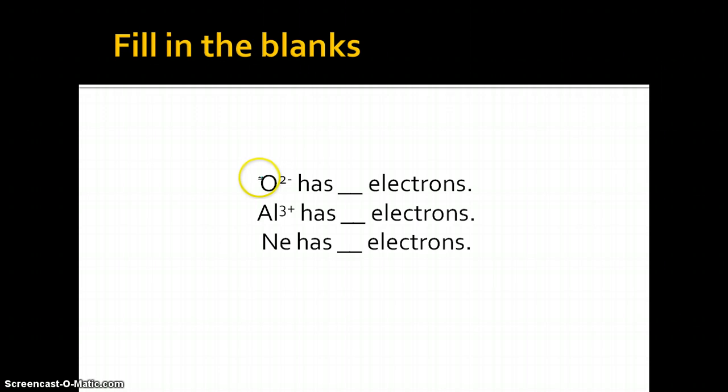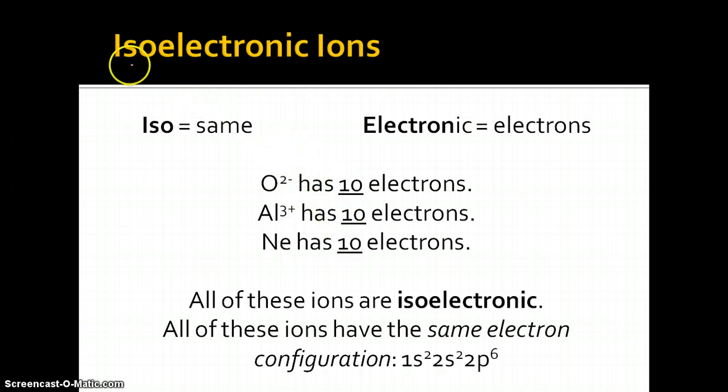How many electrons do these ions have? Oxygen normally has 8 electrons. It's atomic number 8. So when you add 2 more, it's going to have 10 electrons. Aluminum normally has 13, but here we lost 3, so aluminum is going to have 10 electrons. Neon is atomic number 10, so it also has 10 electrons. This is what we call isoelectronic ions. Iso means the same, and electronic, of course, refers to electrons.